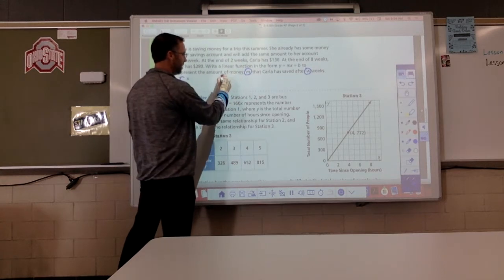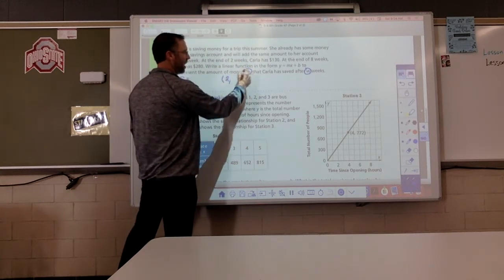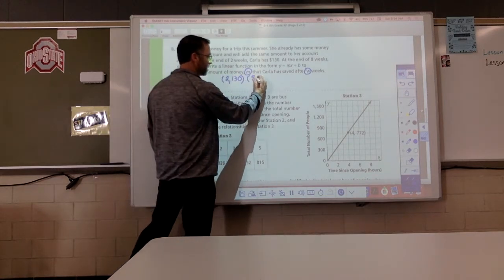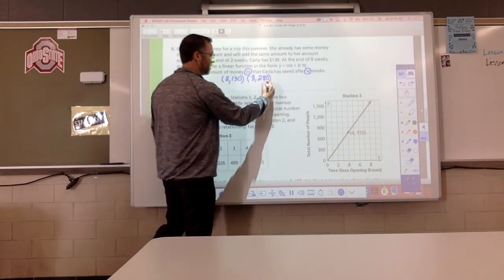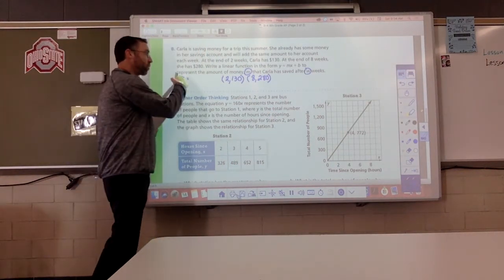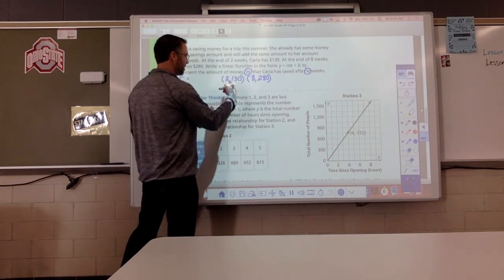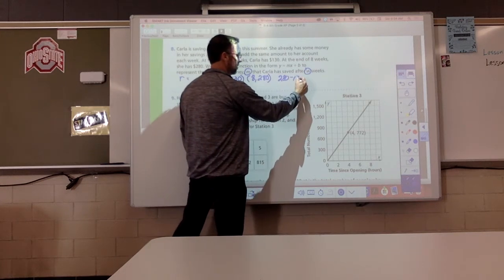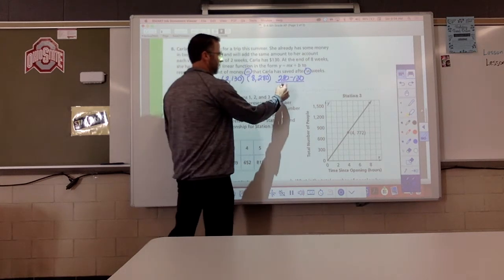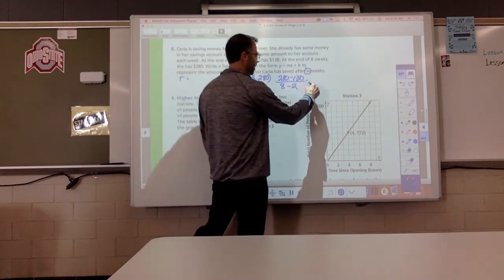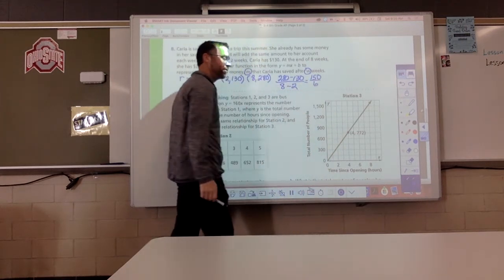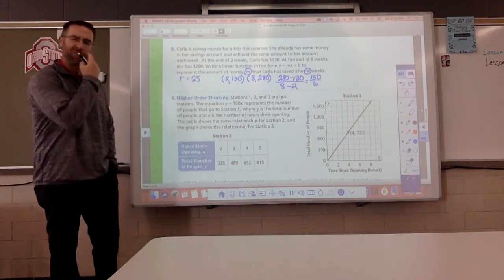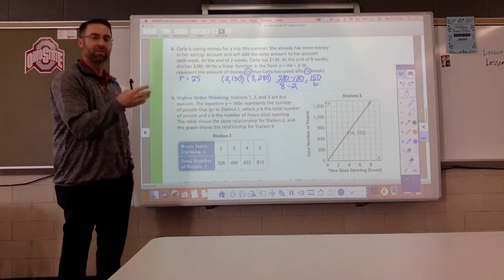All right. So, we got two points. One point is the point 2 comma 130. After two weeks, she has 130 bucks. Eight weeks, $280. All right. Find the slope or your rate of change. Big minus small. So, let's do 280 minus 130. There are my two y values. 8 minus 2 on the bottom. This gives me 150. This gives me 6. 150 divided by 6 is 25. My rate of change is 25. Which just means she's saving $25 each week.